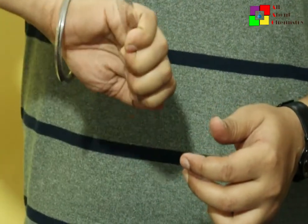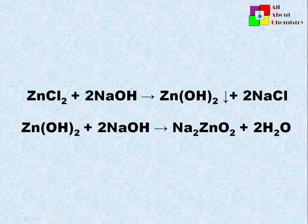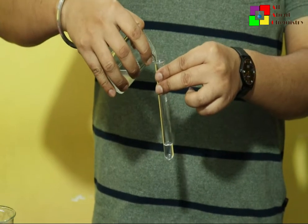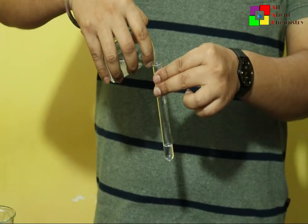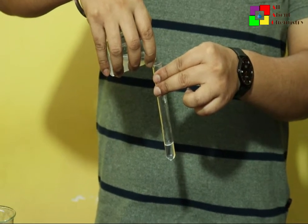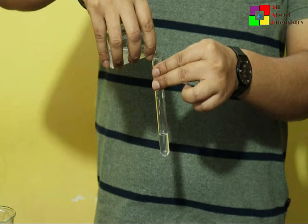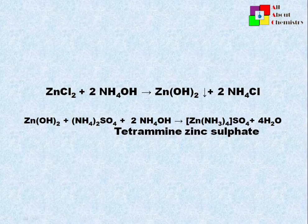When ammonium hydroxide is added instead of sodium hydroxide to the zinc salt, we get the same initial observation. However, the white precipitation of zinc hydroxide gets dissolved in excess ammonium hydroxide due to the formation of tetraamine zinc sulfate.